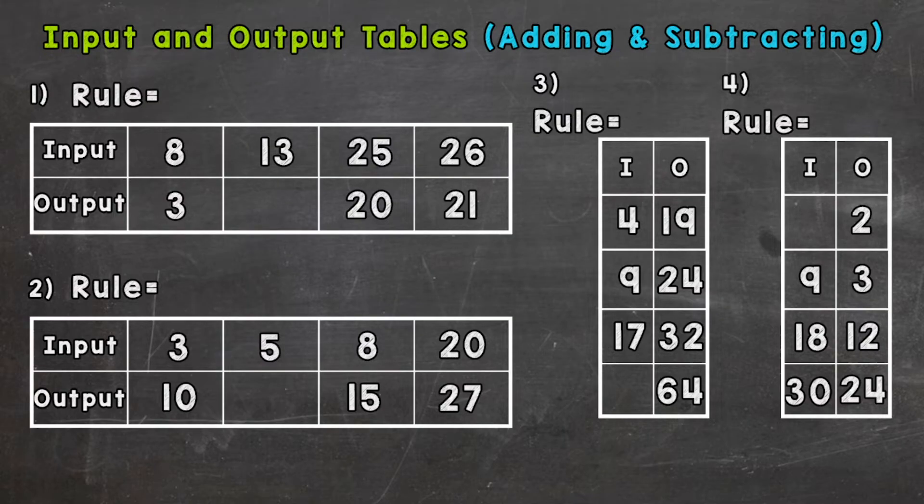Each input and output table we are going to find the rule for and then also fill in the blank part of the table based on that rule. So let's jump right into number one where we have our inputs going across: 8, 13, 25, and 26. We need to determine what's happening to our inputs in order to get the corresponding or matching output.